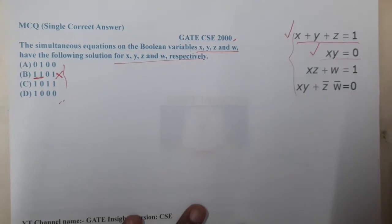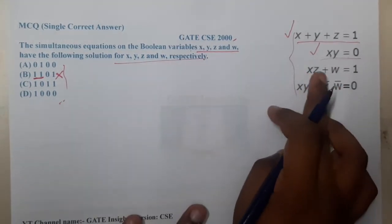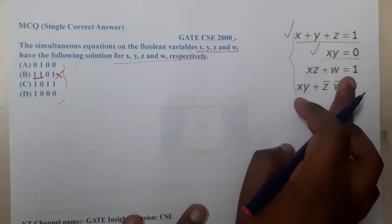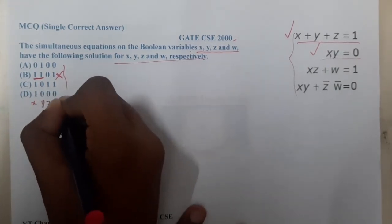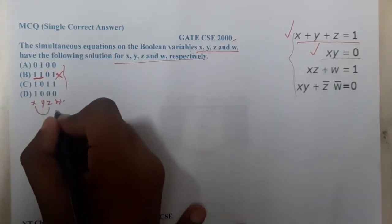Moving on to the next step, that is x times z plus w equals zero. Let me write the variables down: z, w. So x times z plus w.